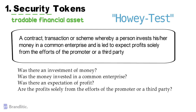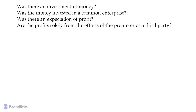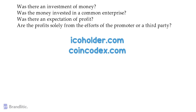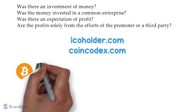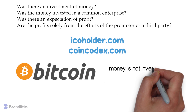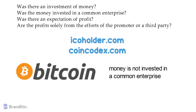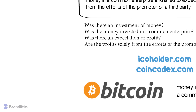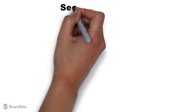Examples of security tokens can be found by looking for Security Token Offerings (STOs) on ICO Holder and CoinCodex.com. And just to answer a popular debate, Bitcoin is not a security token because the money is not invested in a common enterprise. Security tokens can be divided into two types.